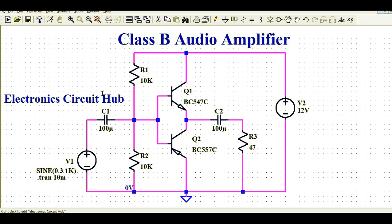In this video I'll run the transient analysis for the correct circuit and for the incorrect circuit, and compare the results. In the last video I didn't catch the difference — the incorrect circuit also appeared to be working, so I missed the mistake.